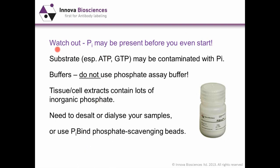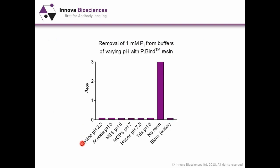Another thing to watch out for: you may have PI in your system before you even start your assay. The substrate — especially ATP or GTP — may be contaminated with PI, so you need high quality reagents. Don't use phosphate assay buffer, as you'll get a severe interference. Tissue and cell extracts also have a lot of inorganic phosphate from the cells, so you need to desalt or dialyze your samples. Alternatively, you can use PI-bind resin, a phosphate scavenging resin, to remove contaminating phosphate from buffers or samples under a wide range of conditions.